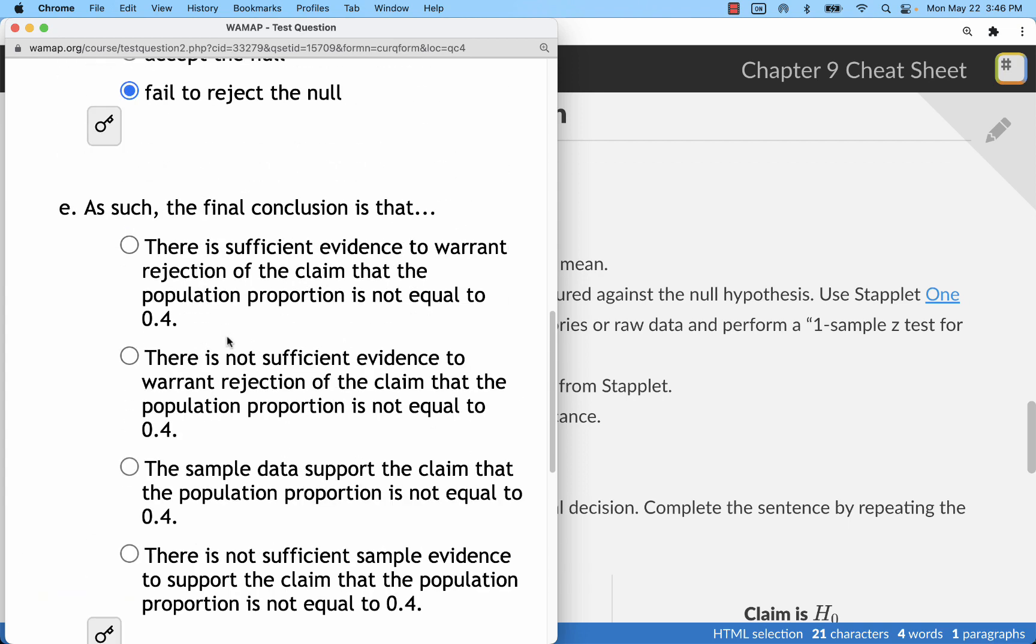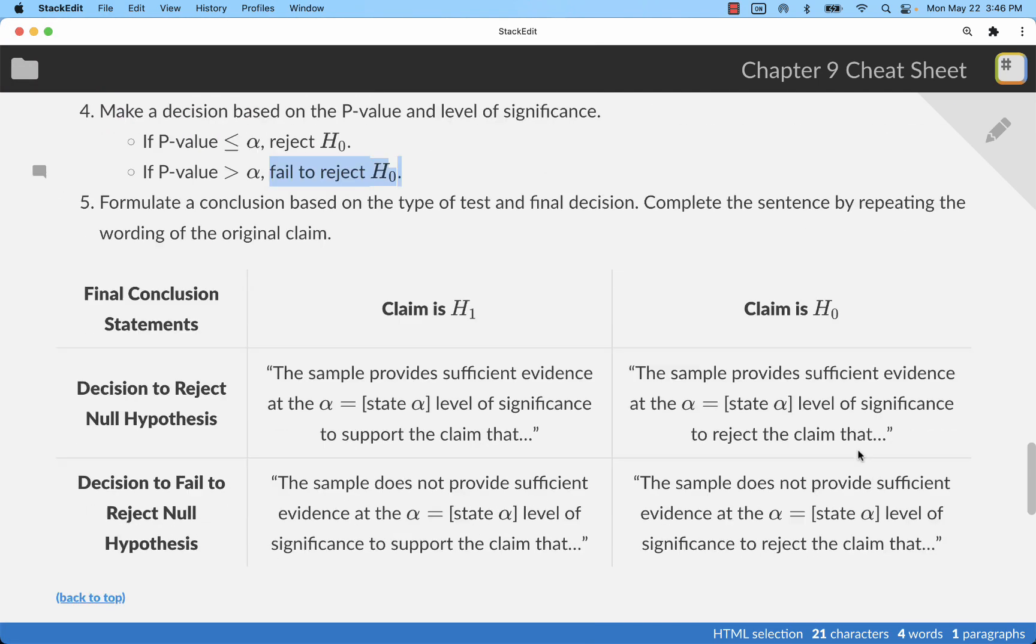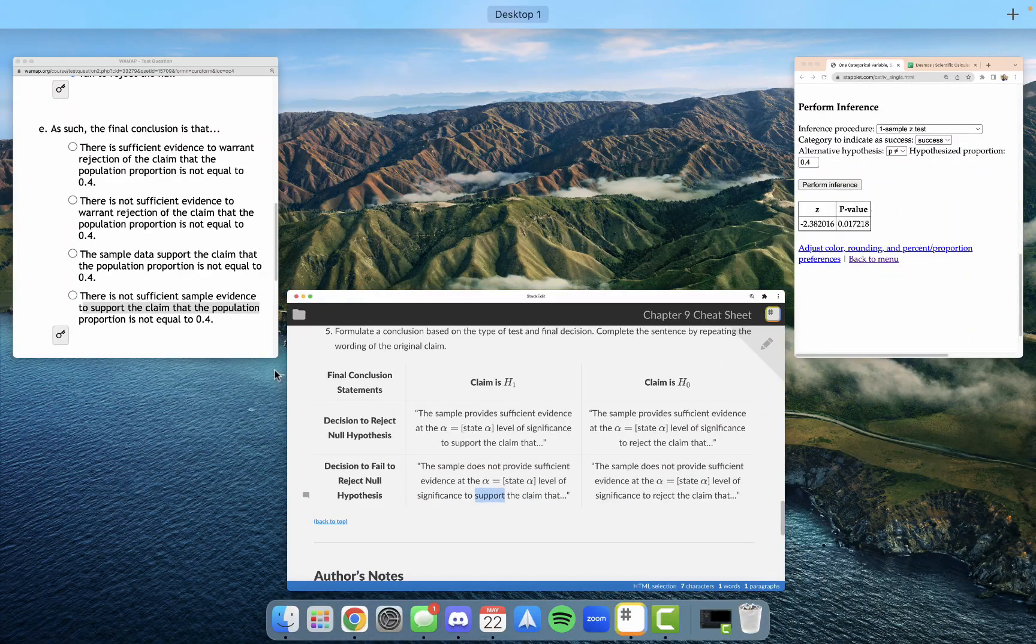And, if we fail to reject, we will not have sufficient evidence. Here, we're going to use the word support for the claim, because the claim is H1. So, we have a failure to reject, right there. Claim of H1. Here, we say we do not have sufficient evidence to support the claim.